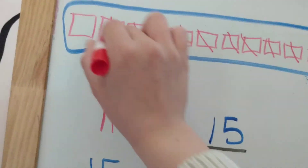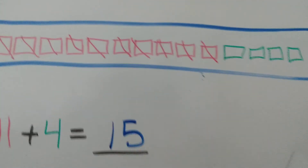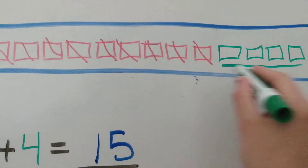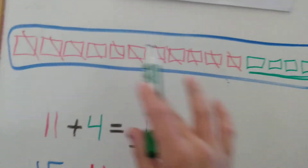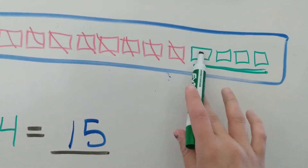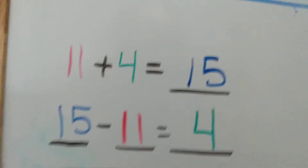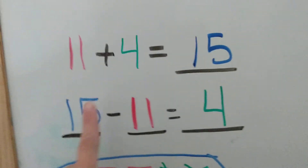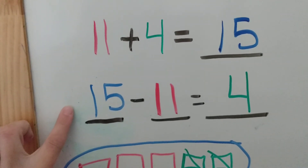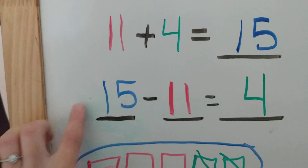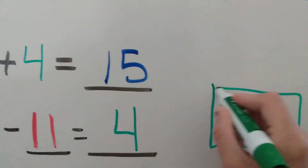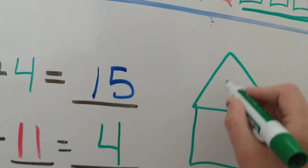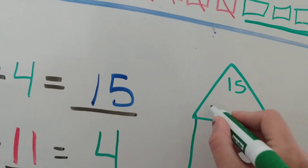We're taking away these eleven red squares, and we are left with the four green squares. So we know that 15 minus 11 equals — one, two, three, four — four. We are using the same numbers. We took the sum from our addition problem and made it a subtraction problem, and found that 15 minus 11 equals 4. It's just like our fact family house — we had 15, 4, and 11, and created two different problems that are related to each other.